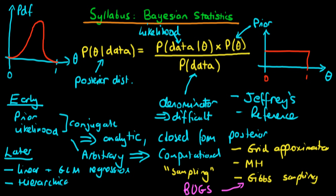We're also going to talk about what is known as hierarchical models. Essentially, it involves placing a prior on prior parameters. For example, if the prior on theta was a beta distribution characterised by two inputs, those two inputs could themselves have some sort of prior distribution placed on them. That's what a hierarchical model means in general.